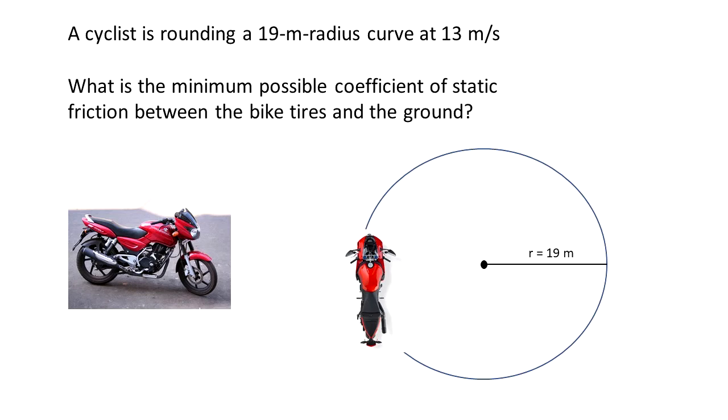A cyclist is rounding a 19 meter radius curve at 13 meters per second. We want to know what is the minimum possible coefficient of static friction between the bike tires and the ground.